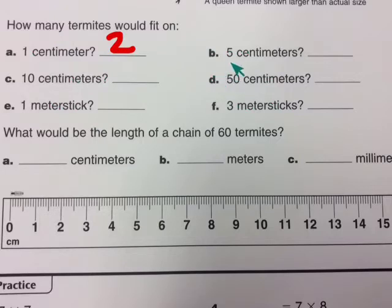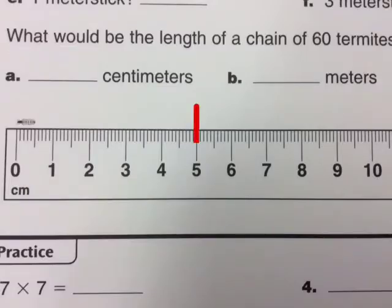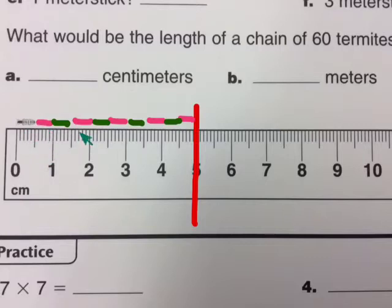So next, how many termites would fit on five centimeters? Let's take a look. Okay here's five centimeters here, and now I'm going to draw a bunch of termites. That's the best I can do. I made them different colors so you can see how many there are. We have two, four, six, eight, ten termites on five centimeters.